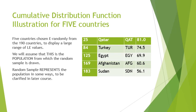The CDF is best illustrated with a small example. I choose five countries from the data set: Qatar, Turkey, Egypt, Afghanistan, and Sudan, chosen for their wide spread of values. Qatar has life expectancy 81.0, Turkey 74.5, Egypt 69.9, Afghanistan 60.6, and Sudan 56.1. We assume this is the full population, so each of these five countries has a 20 percent chance of being chosen.